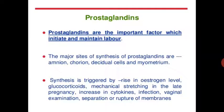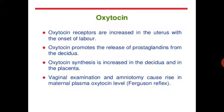Prostaglandins are an important factor which initiate and maintain labor. The major sites of synthesis of prostaglandins are amniotic, chorionic, and decidual cells and the myometrium. Synthesis is triggered by rising estrogen levels, glucocorticoids, mechanical stretching in late pregnancy, increase in cytokines, infection, membrane separation or rupture. Oxytocin receptors are increased in the uterus with the onset of labor. Oxytocin promotes the release of prostaglandins from the decidua, and oxytocin synthesis is increased in the decidua and placenta. Vaginal examination and amniotomy cause a rise in maternal plasma oxytocin — known as the Ferguson reflex.